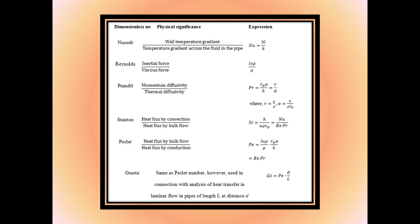From the list of dimensionless numbers: Nusselt is the ratio of wall temperature gradient to temperature gradient across the fluid in the pipe. Reynolds is the ratio of inertia force to viscous force. Prandtl is the ratio of momentum diffusivity to thermal diffusivity. Stanton is the ratio of heat flux by convection to heat flux by bulk flow. Peclet is the ratio of heat flux by bulk flow to heat flux by conduction. Gretz is defined similarly to Prandtl number but used in analysis of heat transfer in laminar flow in pipes at a distance d. All their formulas are dimensionless.